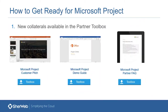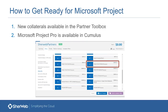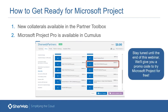We're getting closer to the end of the webinar. Here's how you can get ready to use and sell Microsoft Project Online. In our partner toolbox we have a customer pitch deck, a demo guide, and a partner FAQ. We'll send you the deck with the link to the on-demand recording in a day or two. You can provision yourself with Microsoft Project in our partner portal called Cumulus, and we'll be giving a promo code to provision yourself Project Online Professional for a 30-day free trial.